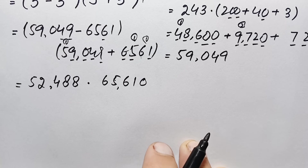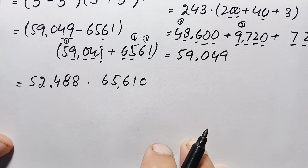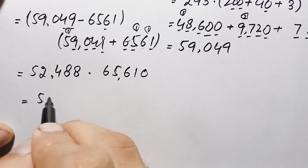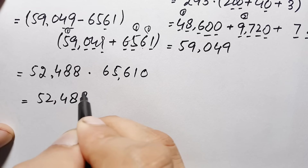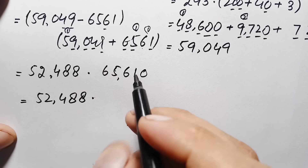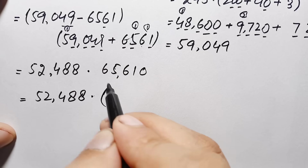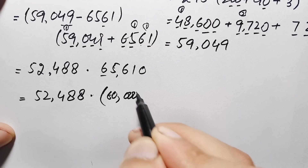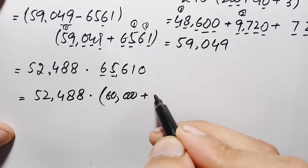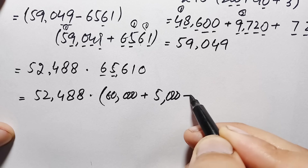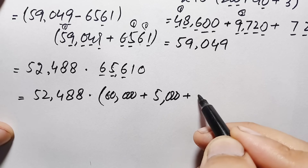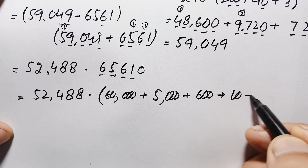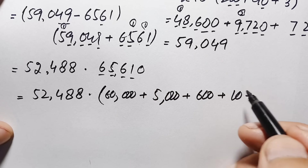We now multiply 52,488 times 65,610 without any calculator. We write 65,610 as the sum of its place values: 60,000 plus 5,000 plus 600 plus 10. We will multiply 52,488 by each of these numbers one by one.